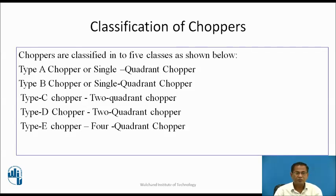Type A chopper, Type B chopper, Type C chopper, Type D chopper, and Type E chopper. Type A and Type B are single quadrant choppers. Type C and Type D are two quadrant choppers, and Type E is the four quadrant chopper.